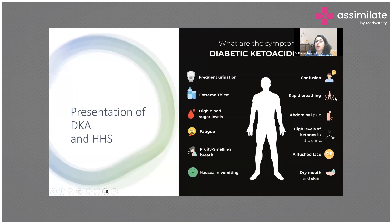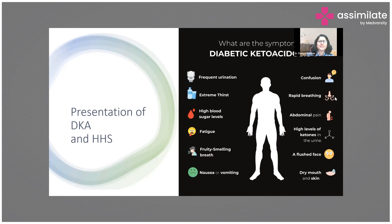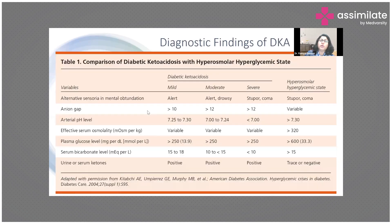Clinically, patients typically present with decreased consciousness or confusion, increased urination, nocturia due to diuresis, and intense thirst if conscious — all due to dehydration. Blood sugar is elevated and the patient feels fatigued. In DKA, there is a typical fruity or ketotic odor. Nausea and vomiting are more common in DKA than in HHS, and patients may also have abdominal pain and rapid or labored breathing.